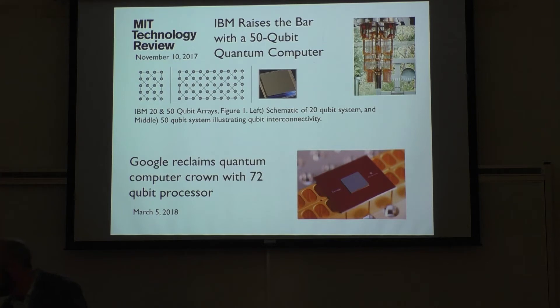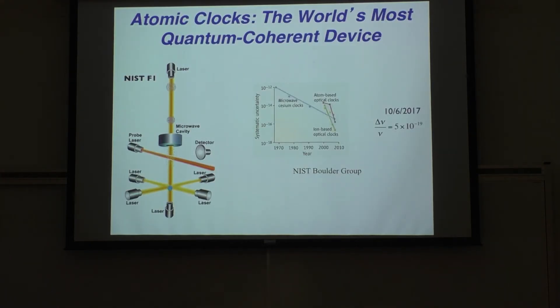If you think about the fundamental physics, I would argue that the world's most quantum coherent device is an atomic clock. An atomic clock is based on the superposition of two spin states of a cesium atom. And we can manipulate that coherence with incredible precision. Here in Maryland, NIST Gaithersburg as well as in Boulder, there's tremendous efforts in this. One can achieve 19 digits of precision here.